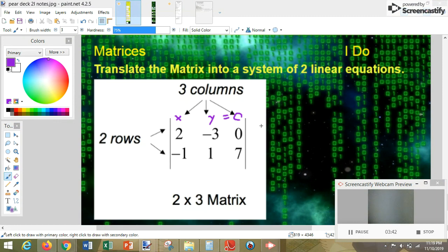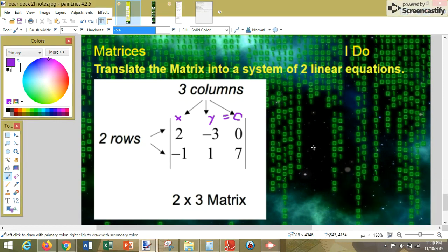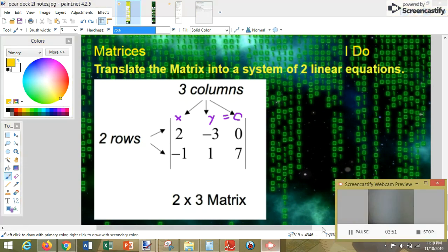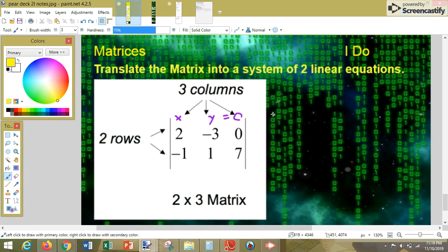To translate this into a system of two equations, we just do this. We put 2x minus 3y equals 0. Next to the 2, we put x. Next to the negative 3, we put y. Put equal sign between the variables and the constant.